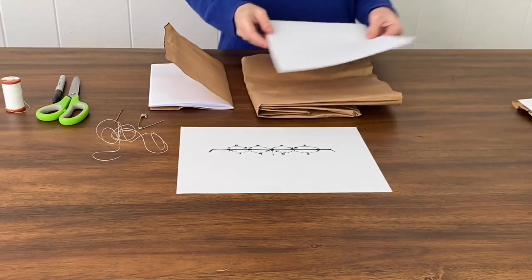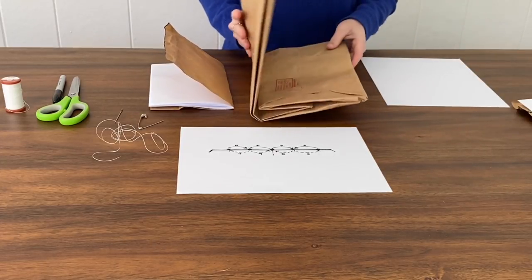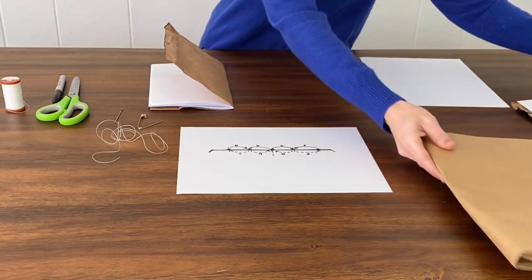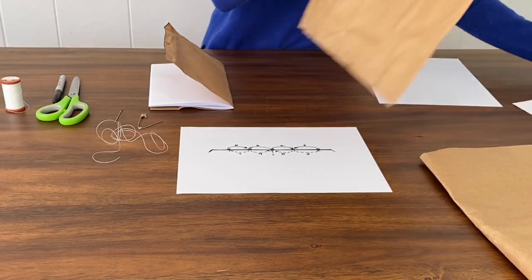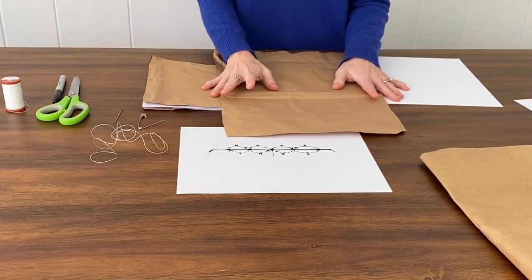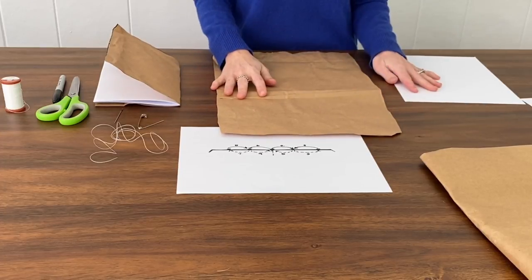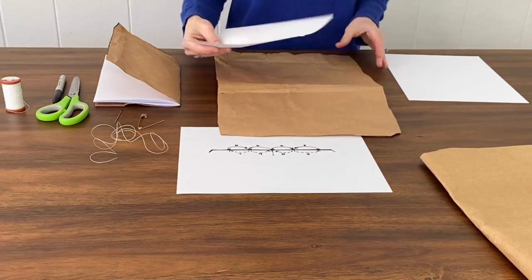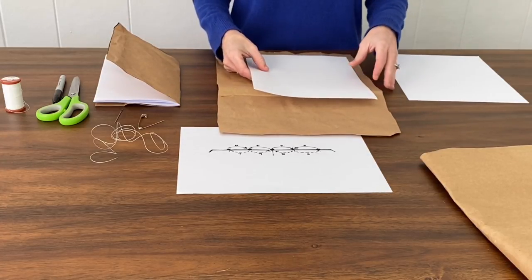The first thing you're going to need to do is cut off the front panel of your paper bag. I've already done this to save us some time, so we have just one sheet of brown paper. We're going to use a piece of our white paper to trace to make a cover for our nature journal.